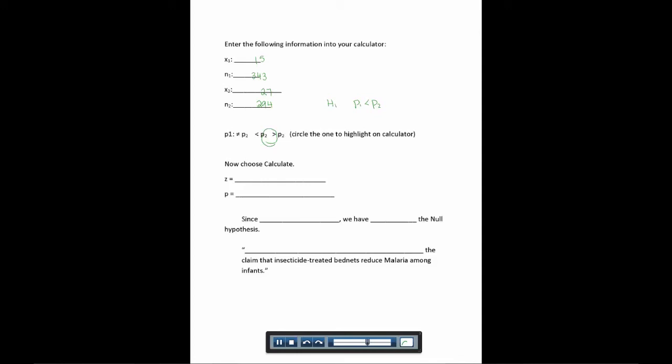So now you'll choose calculate. And it's going to give you a Z value and a P value. So the Z value gives you negative 2.44, and the P value is 0.0074. Now remember, our alpha, what we chose here is 0.01.